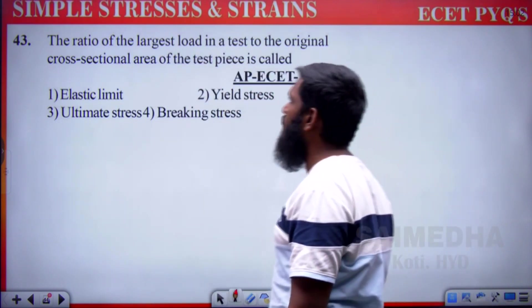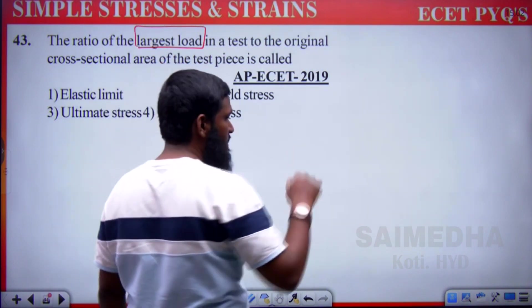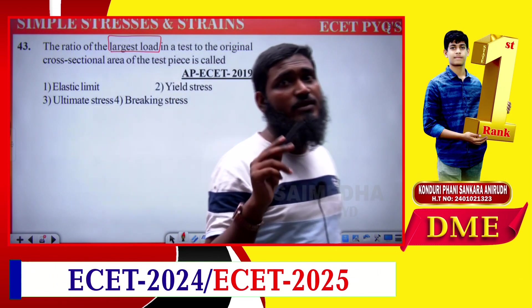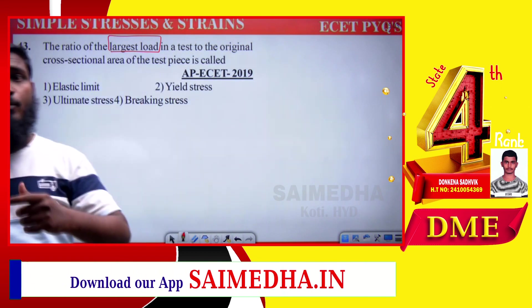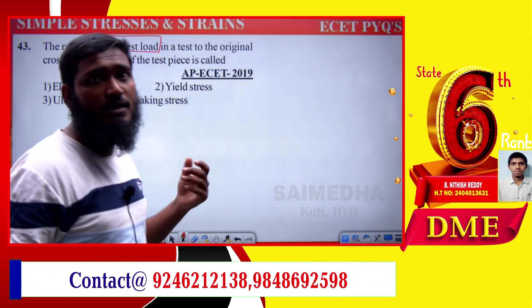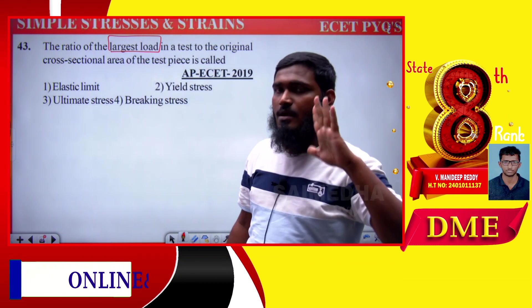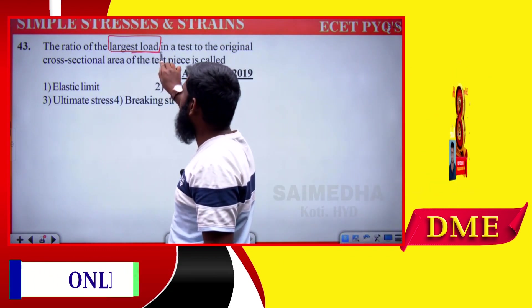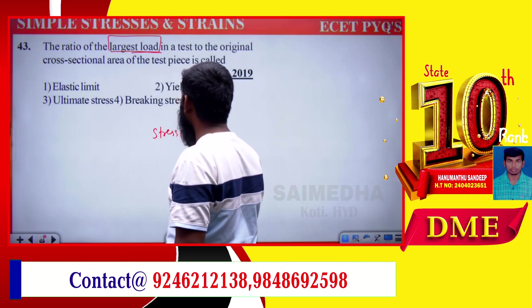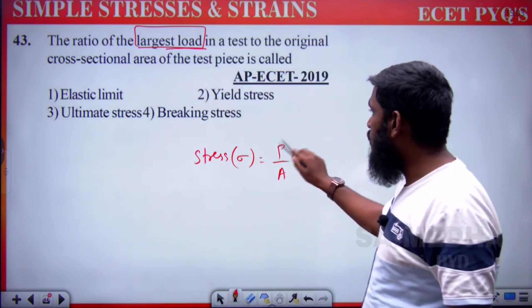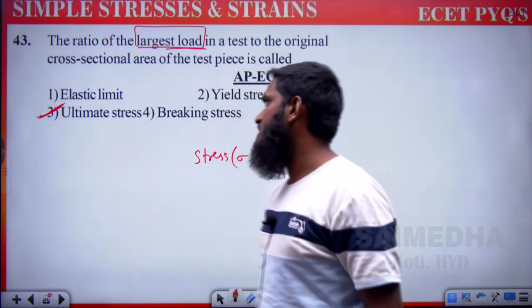The ratio of the largest load to original cross-sectional area: from the stress-strain diagram, the largest load corresponds to the ultimate point — maximum stress. Ultimate load divided by area = ultimate stress. Option 3 is correct.